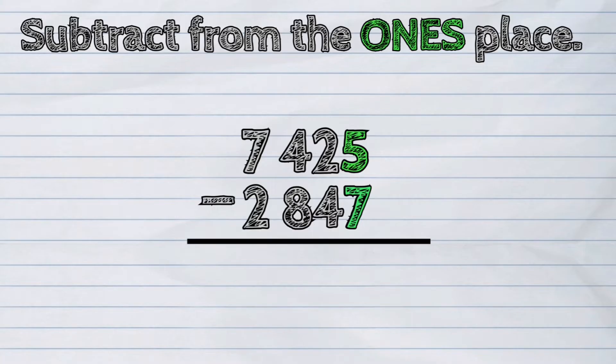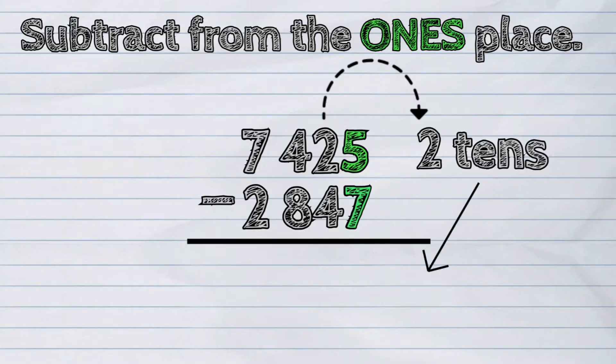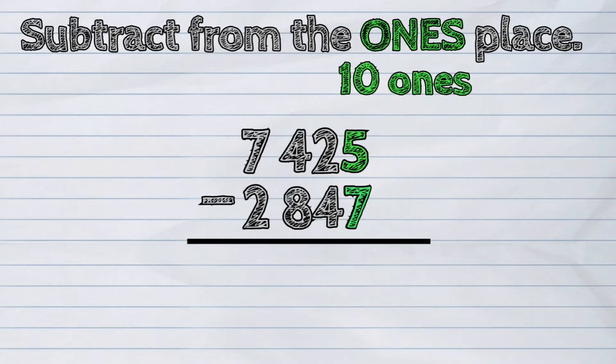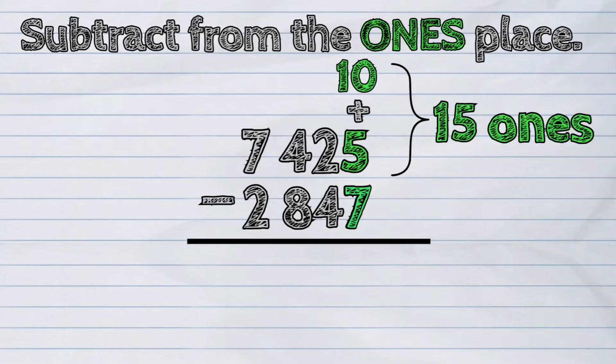We will borrow from the tens place. We will regroup two tens as one ten and ten ones. We will then borrow a group of ten from the tens place. So now, ten ones plus five ones is fifteen ones.